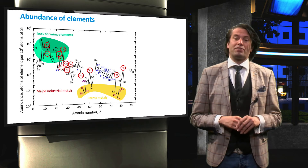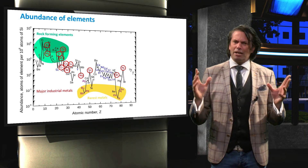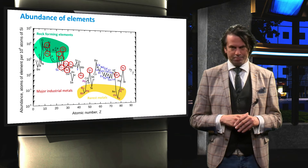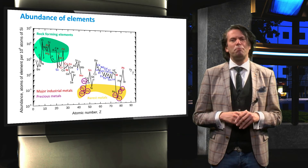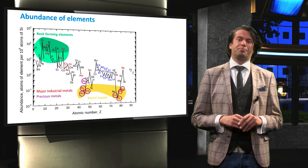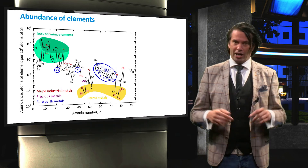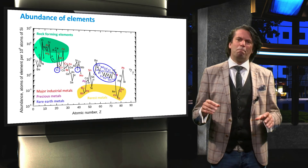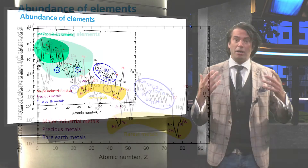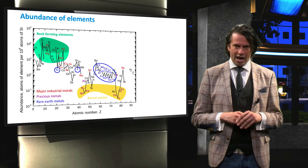The major industrial metals are indicated in red. These elements have a global production of at least 30 million kilograms per year. The precious metals are shown in purple — these elements are rare and very expensive. Finally, there are the rare earth elements. These elements are much more abundant than the precious metals. However, these elements do not have the tendency to become concentrated in exploitable ore deposits. Therefore, most of the world's supply of rare earth elements comes from only a handful of sources.